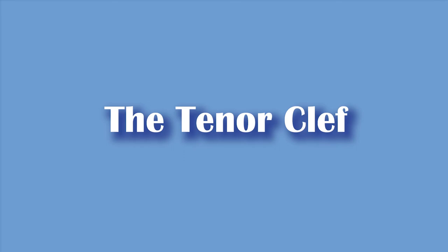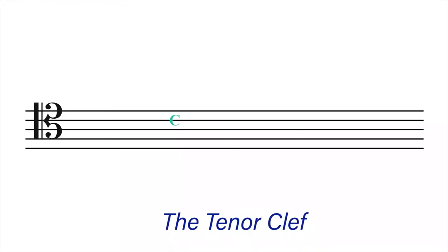The tenor clef: when the C clef is placed on the fourth line of the staff, it becomes the tenor clef, and the fourth line becomes middle C. Other lines can then be derived as follows. The fourth line is C, so the fourth space will be D and the fifth line will be E. Going downward: the third space will be B, the third line will be A. Since we have exhausted our seven alphabet letters, we go back to G as the second space, F as the second line, E as the first space, and D as the first line.